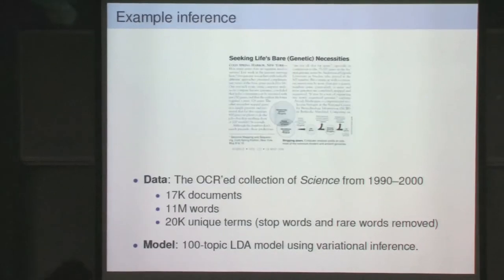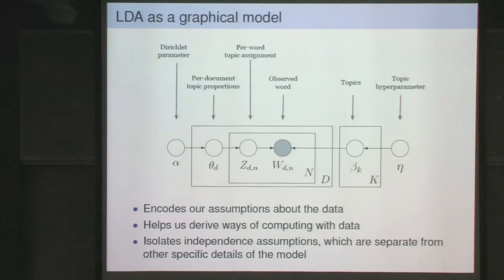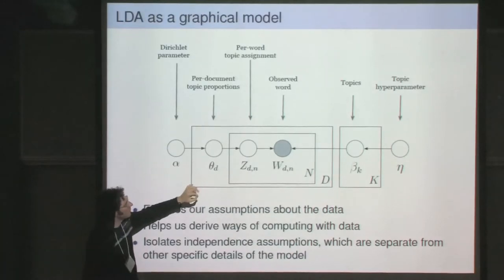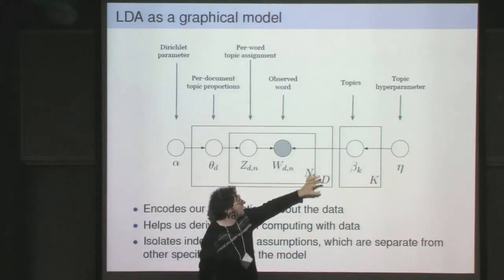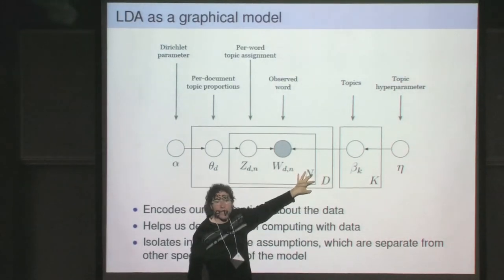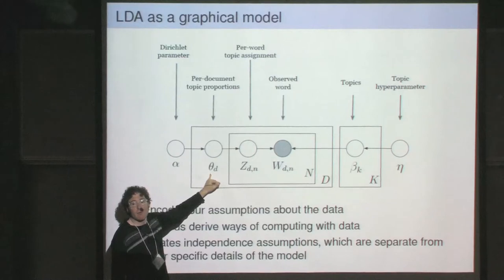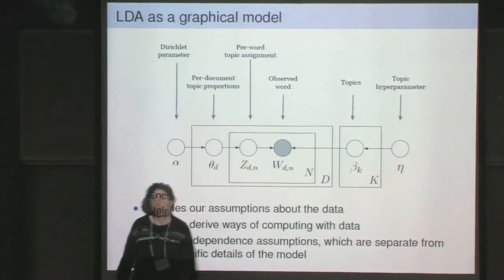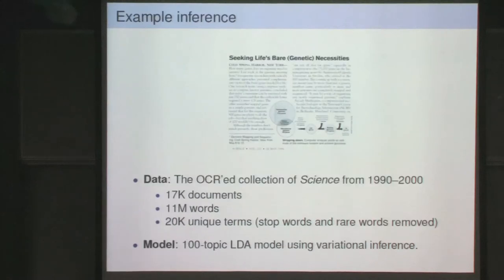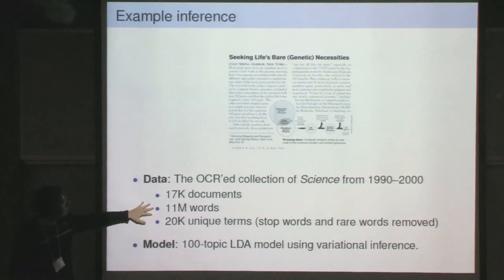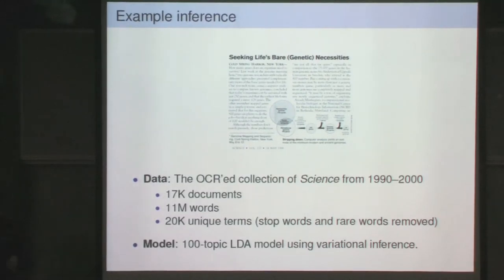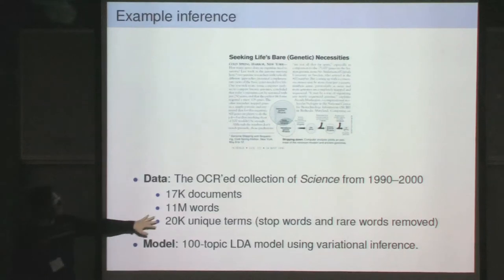One important thing to emphasize: in LDA, the same set of topics describes the whole collection of documents, but each document exhibits those topics with different proportions. We took the OCR collection of Science Magazine from 1990 to 2000—17,000 documents with 11 million observed words. We used a vocabulary of 20,000 terms, removing stop words and very rare words. We fit a 100-topic LDA model using variational inference.